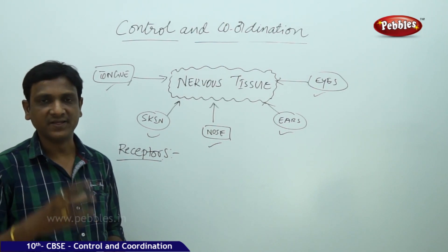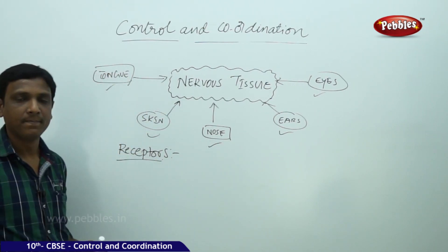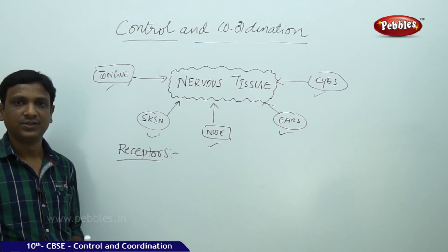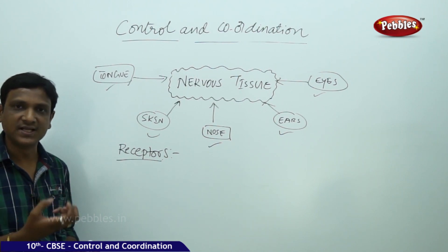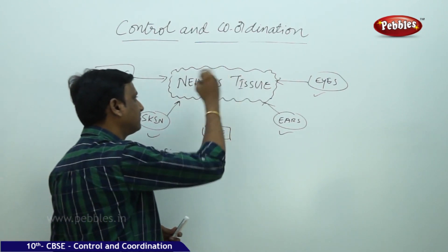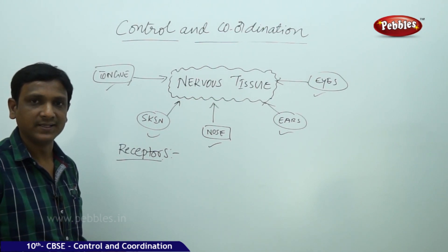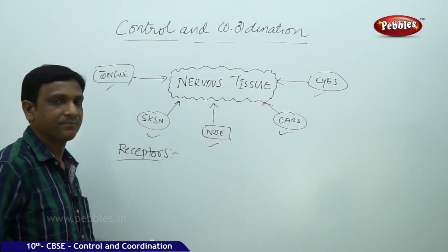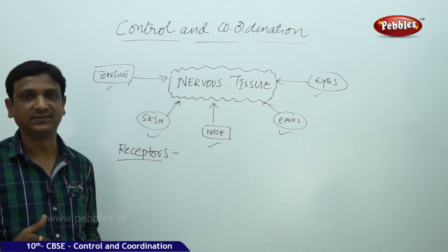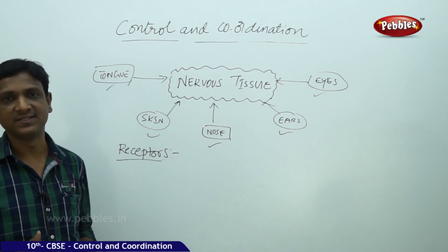The receptors are also a part of this nervous tissue. The receptors will identify and receive the information. After receiving this information, it is transferred to the processing unit, which is also a part of the nervous system. Now let us see what are the various parts of the nervous system and how the information is carried to the processing part.